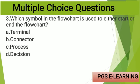MCQ number three: which symbol in the flowchart is used to either start or end the flowchart? Option A: terminal, Option B: connector, Option C: process, Option D: decision.